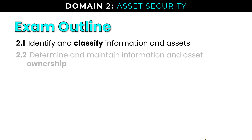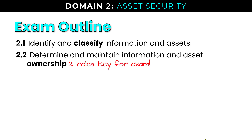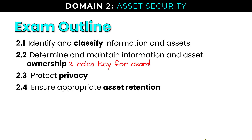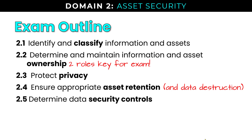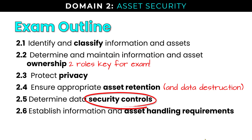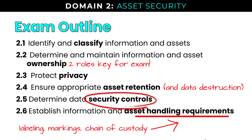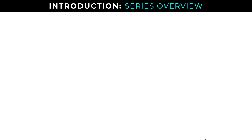Information and asset classification is listed in this domain, along with information and asset ownership. In the area of ownership, there are two roles that are going to be key for the exam. Protecting privacy and asset retention also fall into this section, along with data destruction. You're expected to understand how to determine appropriate data security controls and establishing information and asset handling requirements — including labeling, marking, and chain of custody, which is important in evidence handling.